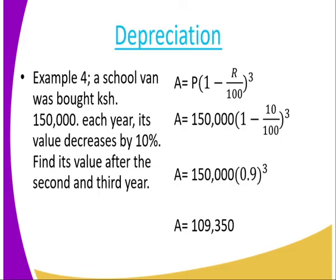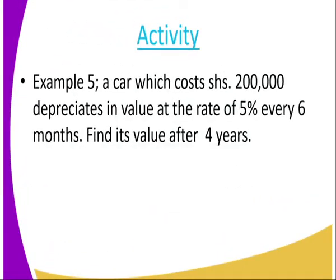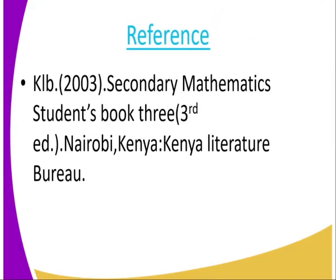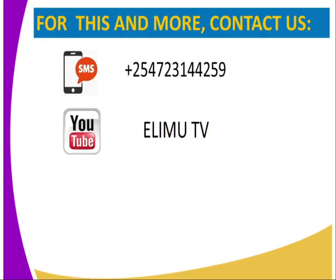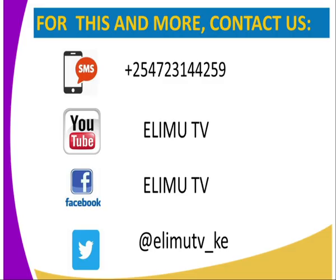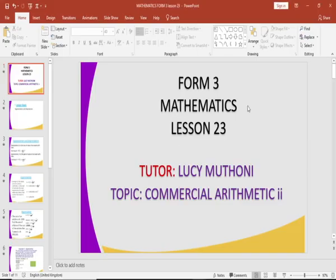You can see how easy mathematics is. Activity — example 5: a car which costs $200,000 depreciates in value at a rate of 5% every 6 months. Find its value after 4 years. You can visit KELB 2003 secondary mathematics student book 3 for more information. You can also reach us through SMS, YouTube, Facebook, or Twitter. Stay tuned to RMTV.